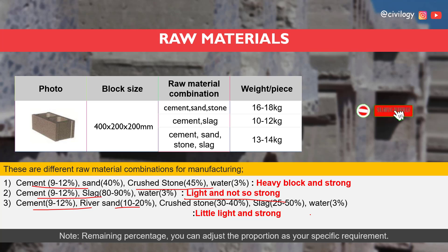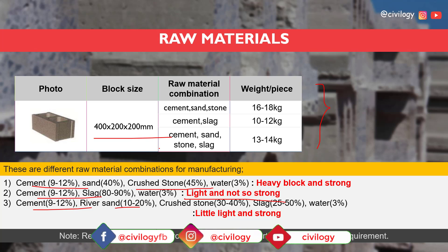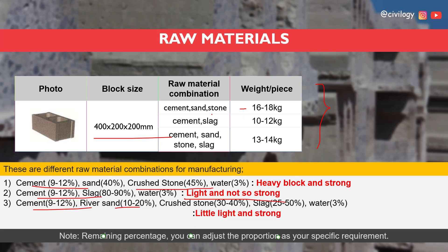You can see in this table that with a block size of 400 × 200 × 200 mm, we get 16–18 kg for the first combination, 10–12 kg for the second combination, and 13–14 kg for the third combination.